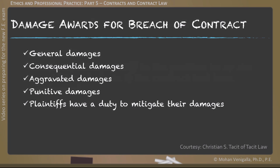An example of consequential damages is economic harm. Aggravated damages are awarded for the manner in which the contract was breached, causing additional harm. So if a breach results in emotional distress or mental distress, that is what you call aggravated damage. Punitive damage, on the other hand, is awarded to punish certain types of behavior such as fraud and bad faith.